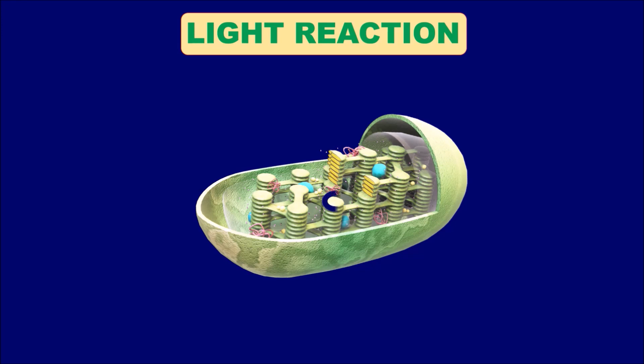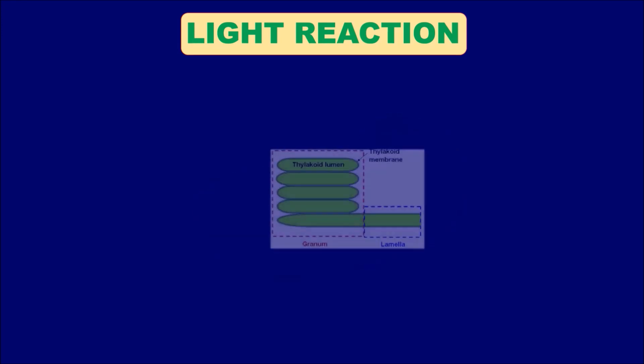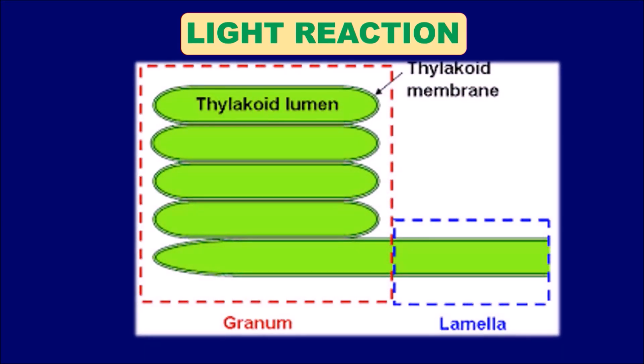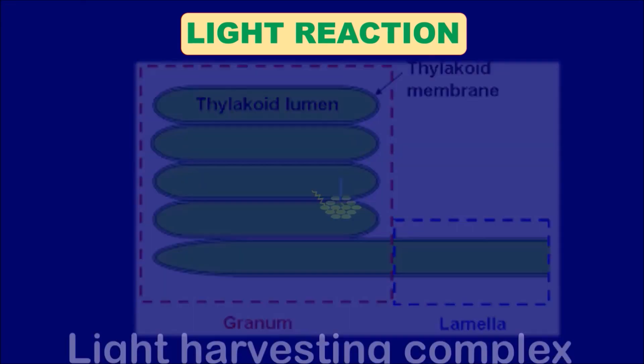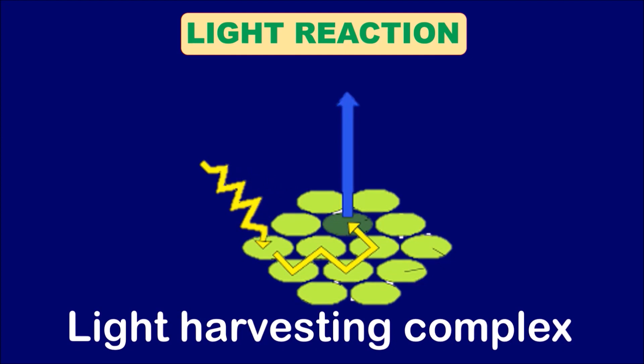It occurs in grana of chloroplasts which constitutes of stacks of thylakoids. The earlier said pigments are embedded in the thylakoid membrane in the form of light harvesting complex at many points. There are majorly three events involved in this process.